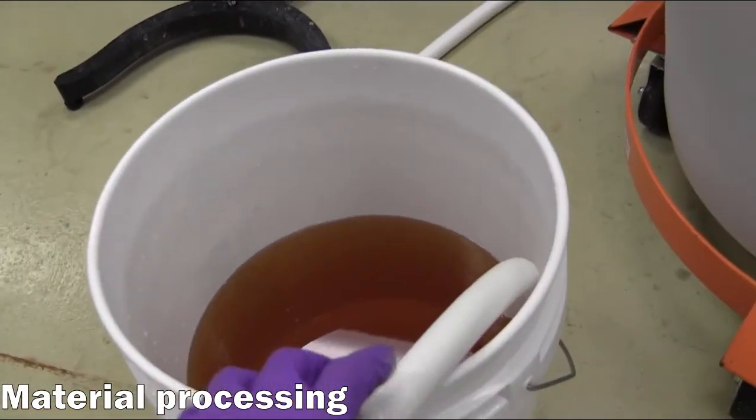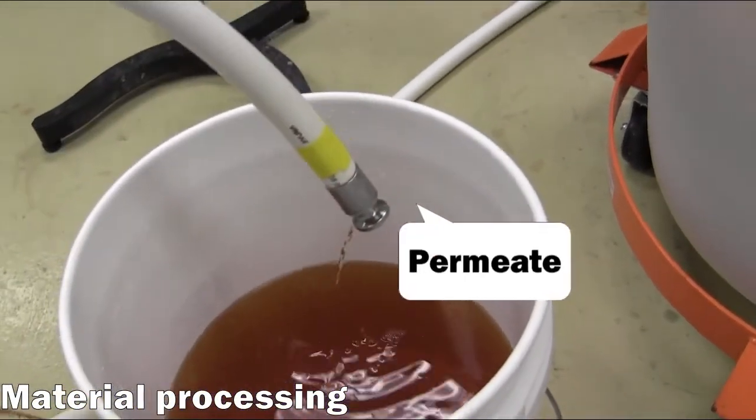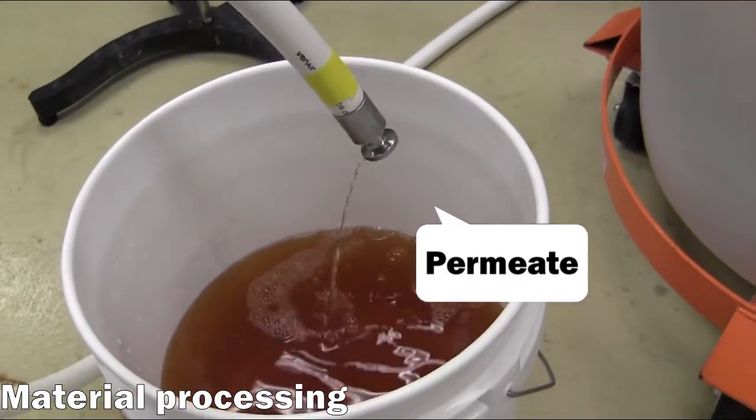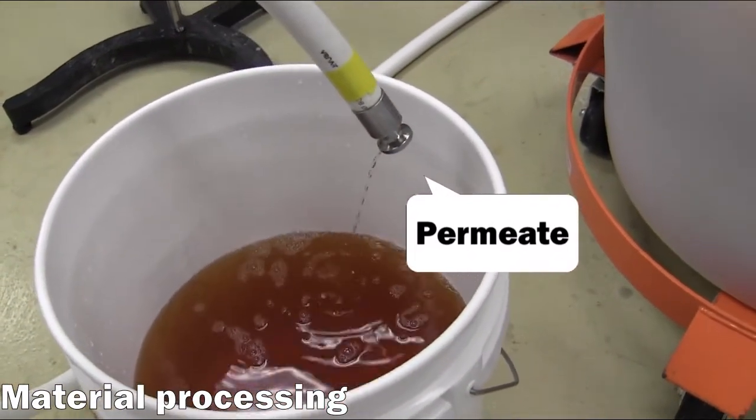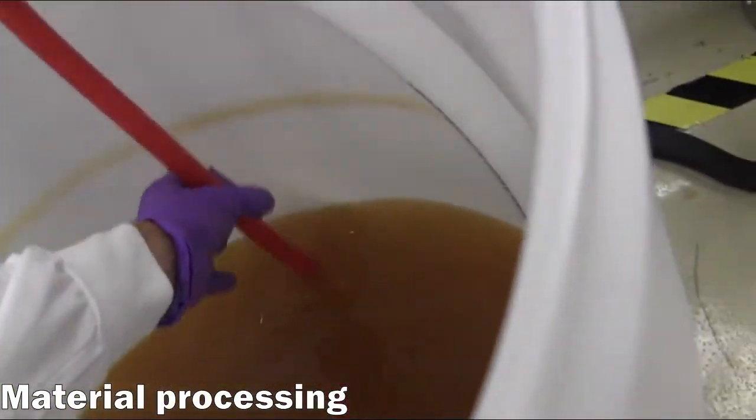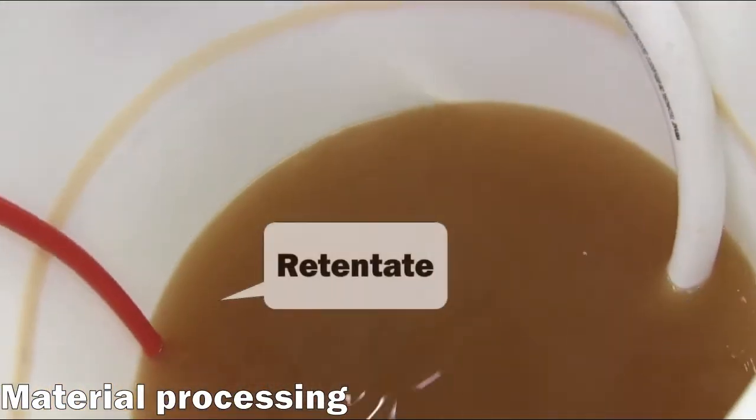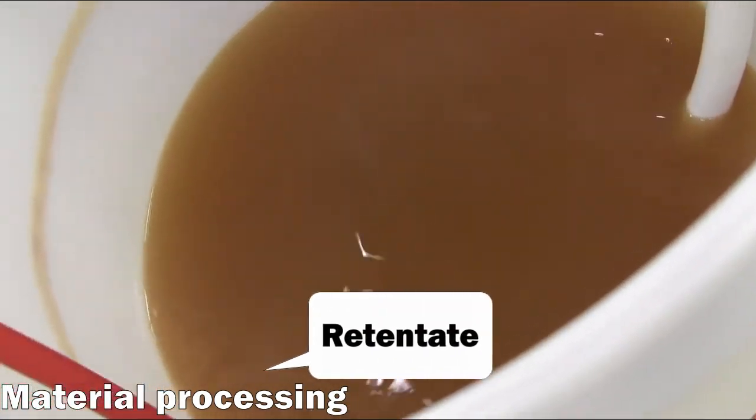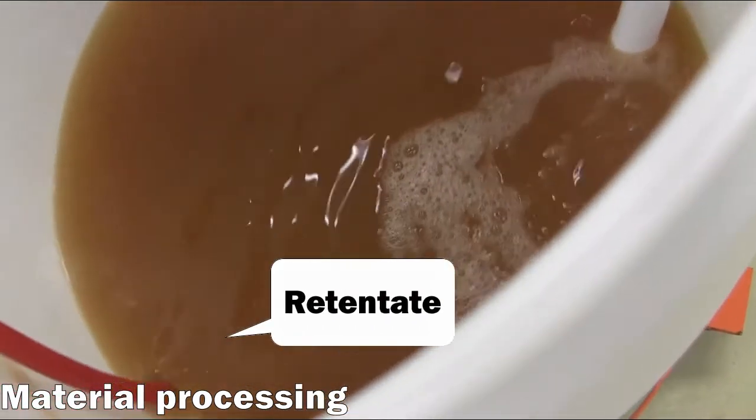The retentate hose is also placed in the vessel of input material, allowing the recirculation of unfiltered crossflow.